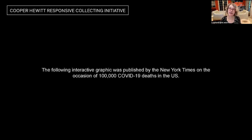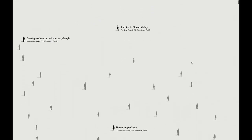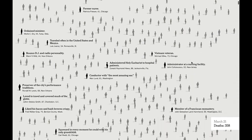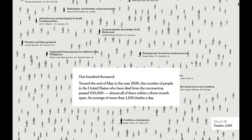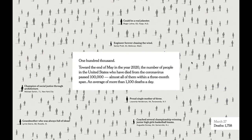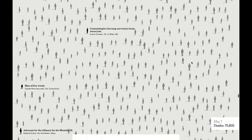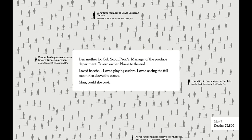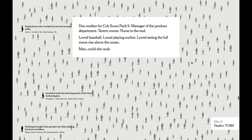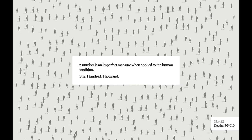The last piece we're sharing tonight is an interactive graphic published by the New York Times on the occasion of 100,000 COVID-19 deaths in the U.S. — a number that today is almost a million. Small gray and black figures scroll upward on a pale gray background. Some have names. Toward the end of May 2020, the number of people in the U.S. who died from the coronavirus passed 100,000. Den mother for Cub Scout Pack 9. Manager of the produce department. Tavern owner. Nurse to the end. One hundred thousand.